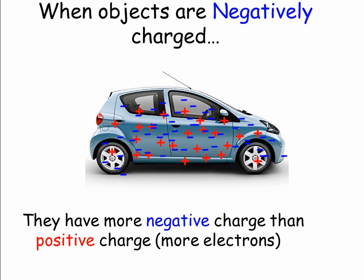When objects are negatively charged, there's more negative charge than positive charge. The object has got more electrons, or it's gained electrons.